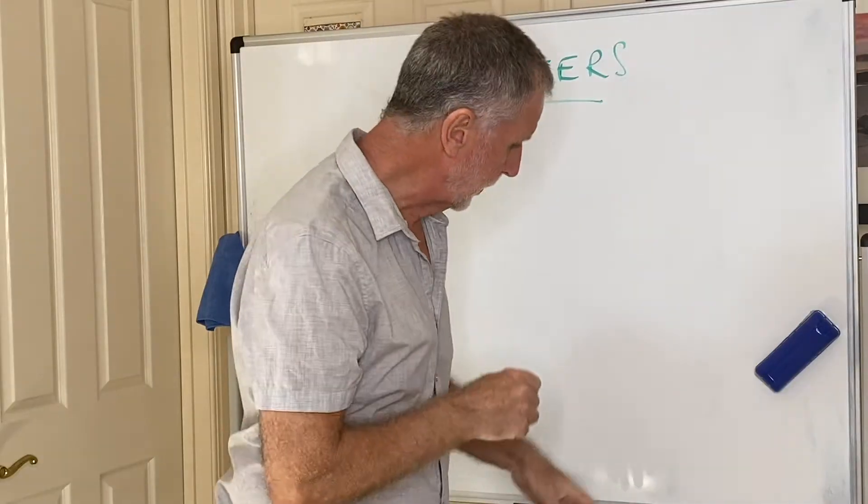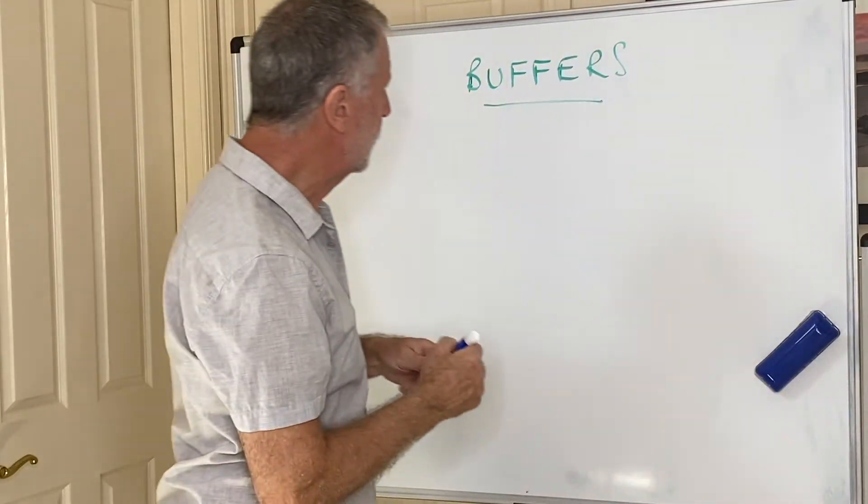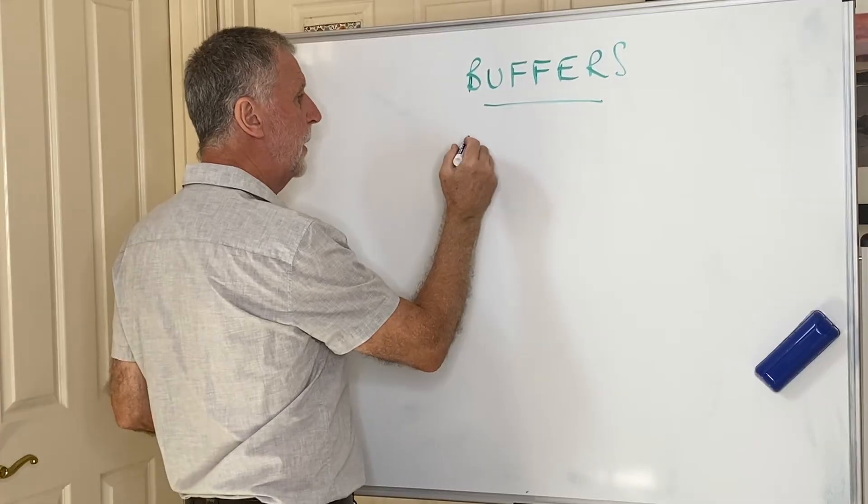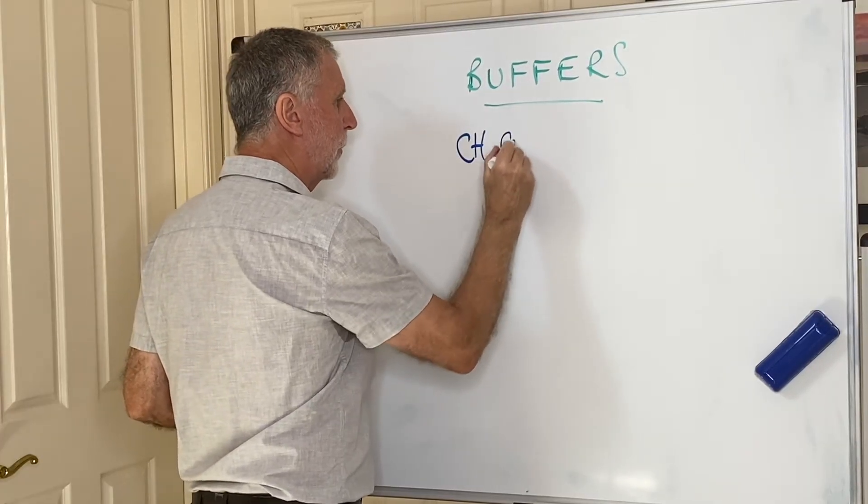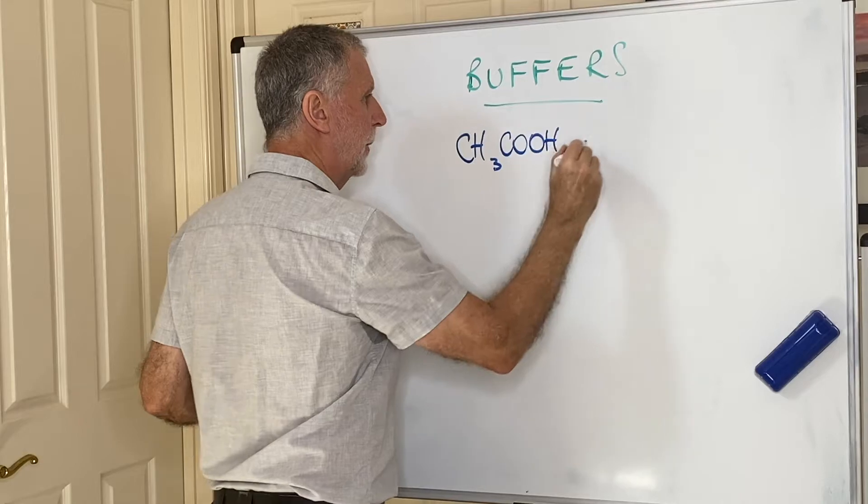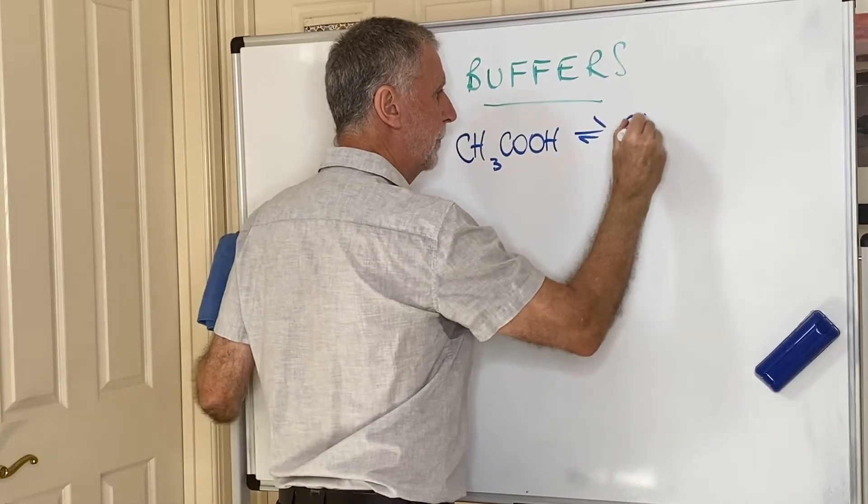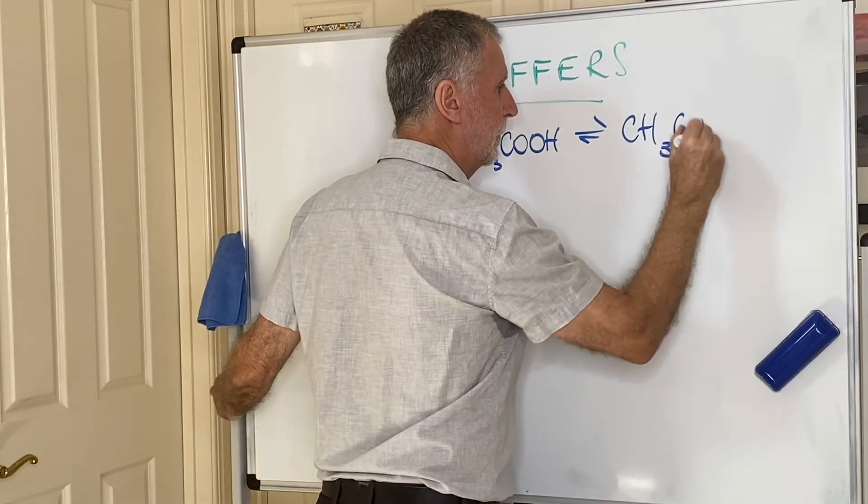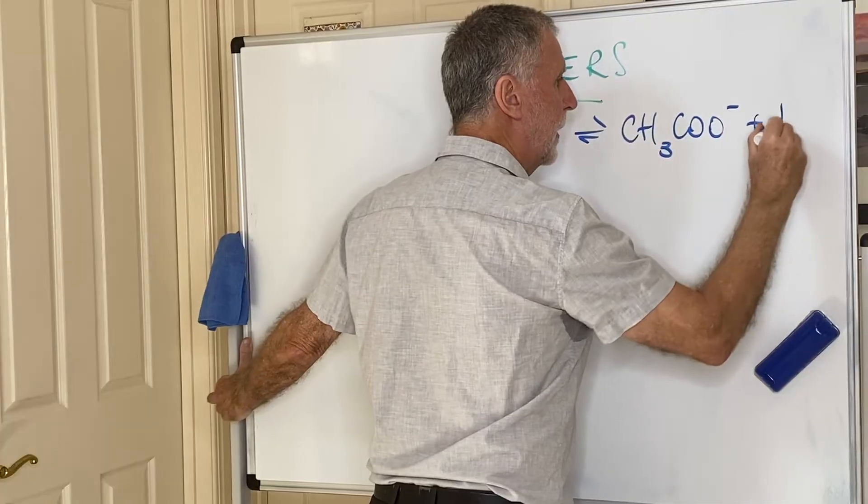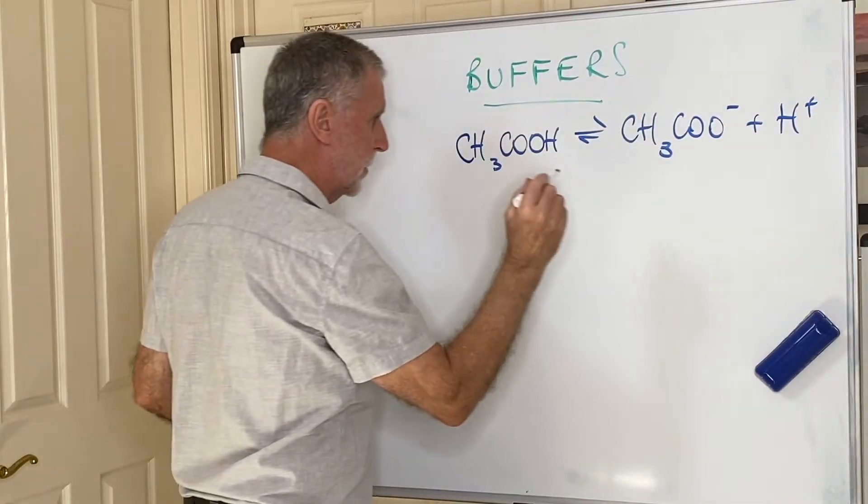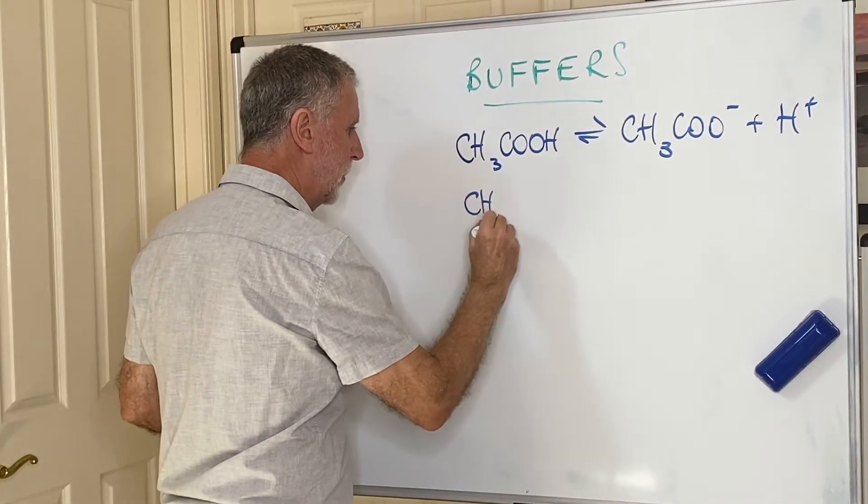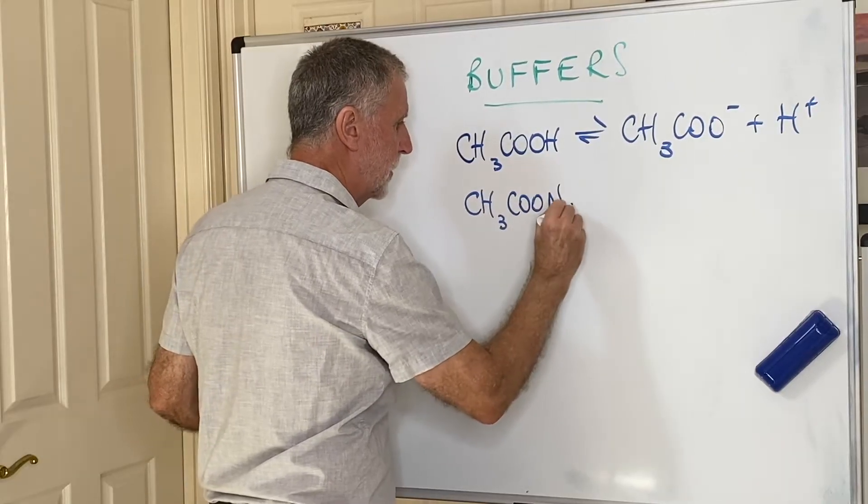So how do buffers work? Well, buffers are usually the combination of a weak acid - we're going to use our old friend ethanoic - together with the salt of that weak acid. And the most common salt is the sodium salt.